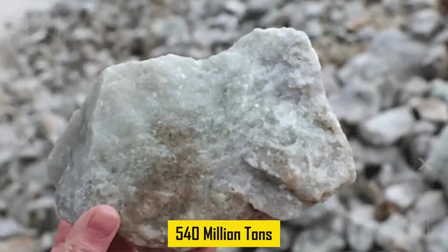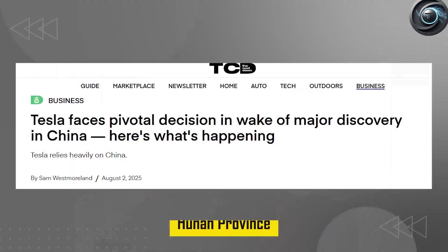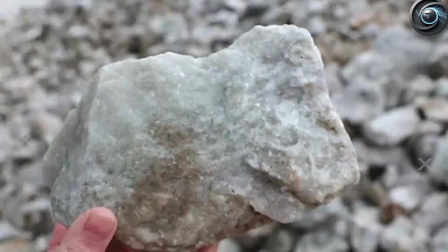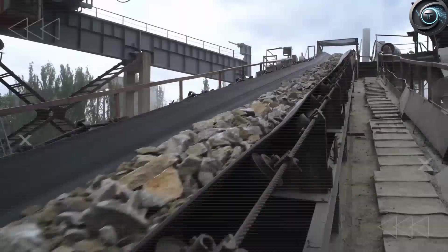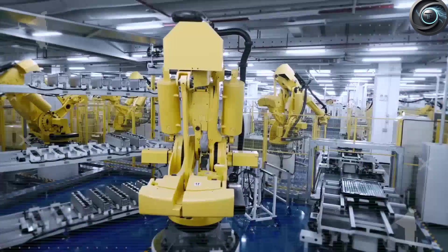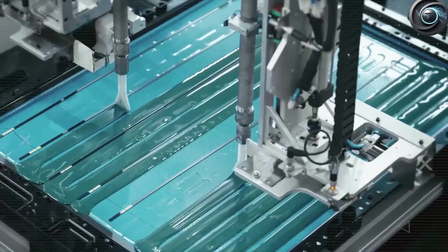In July, the world's attention turned toward a seismic discovery deep in the heart of Hunan Province, China. A lithium gold mine, one so vast in scale that it almost defies comprehension, had been uncovered, containing 540 million tons of ore, with a staggering 1.31 million tons of lithium oxide locked within its rocky veins.